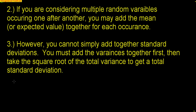However, you cannot simply add standard deviations. You must add the variance first, then take the square root of the total variance to get a total standard deviation. When you square a standard deviation you get the variance, so vice versa the square root of variance equals standard deviation. When combining multiple standard deviations, you square each one to get variance, add those variances, then take the square root to get back to standard deviation.